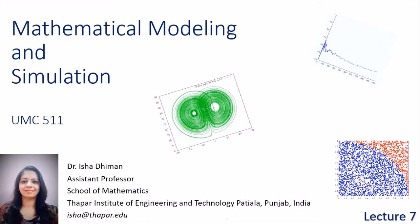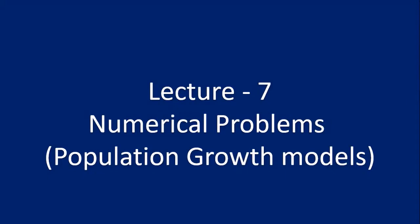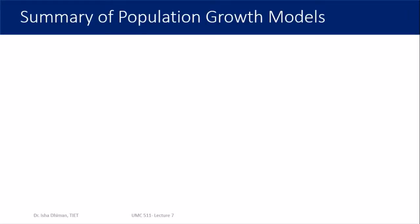Hello everyone, welcome to lecture 7 of Mathematical Modeling and Simulation. In this lecture we are going to look at numerical problems related with population growth models. In the previous two to three lectures we covered different kinds of population growth models, so this lecture is dedicated to questions related to those models. First, I'd like to begin with a summary of population growth models discussed so far. The general model is dp/dt = f(p) with initial condition p(t0) = p0.